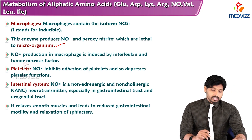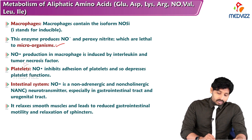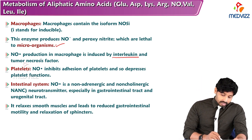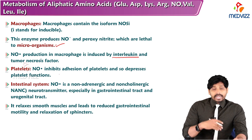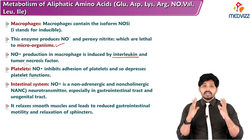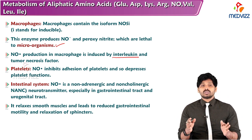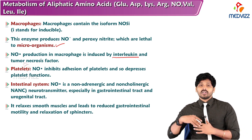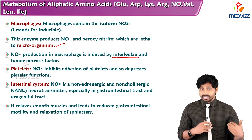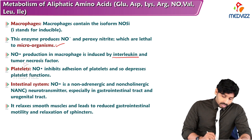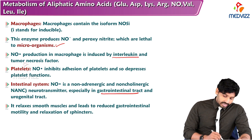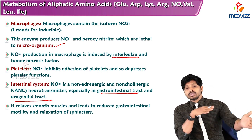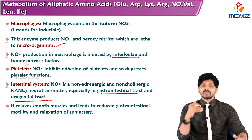In platelets, nitric oxide inhibits the adhesion of platelets, depressing platelet function. In the intestinal system, nitric oxide is a non-adrenergic, non-cholinergic neurotransmitter especially in the gastrointestinal tract and urogenital tract. It relaxes smooth muscles, leading to reduced GI motility and relaxation of sphincters.